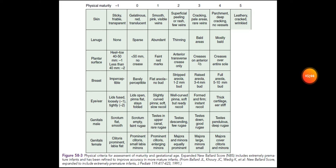The third parameter is plantar surface. Heel-to-toe measurement of 40 to 50 mm is negative one point, and less than 40 mm is negative two points. Less than 50 mm with no crease carries zero points. Faint red marks carry one point. Anterior transverse crease only carries two points. Creases on anterior two-thirds carries three points. Creases over the entire sole carries four points.